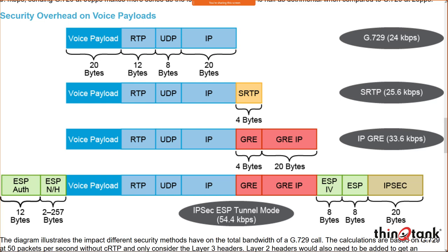We're not even considering the delay for encryption and decryption — just the raw overhead. You need to be aware of what each application adds to overall overhead, because you might calculate bandwidth consumption based on just the basic numbers like G729 by itself, without accounting for all the overhead. In reality with full ESP tunneling, you'd need twice as much bandwidth for the same number of calls — 10 calls at the top row is 240 kilobits per second; at the bottom with all overhead it's 540 kilobits per second.